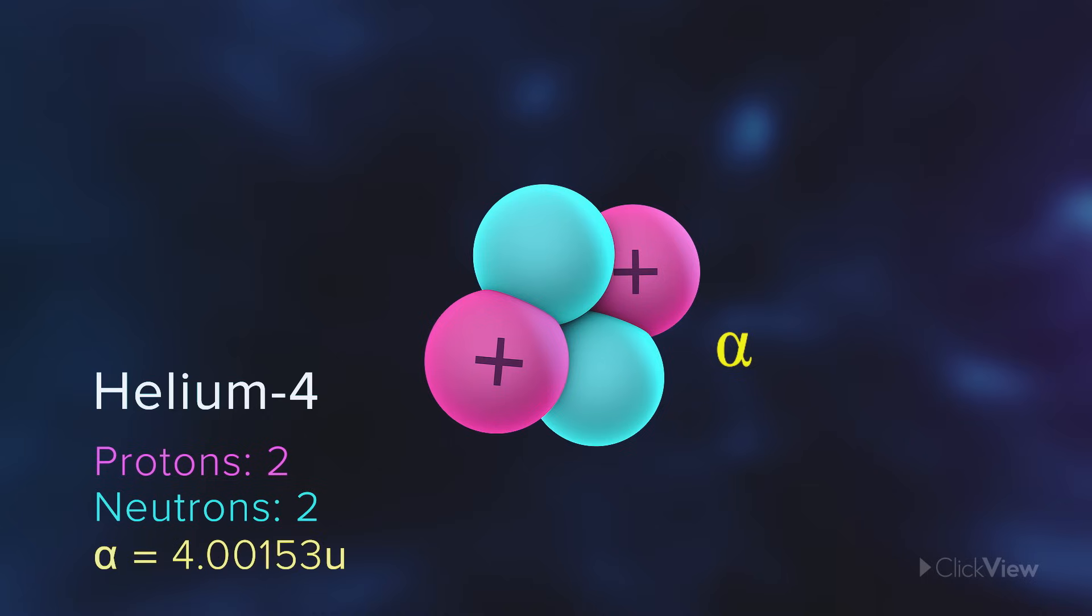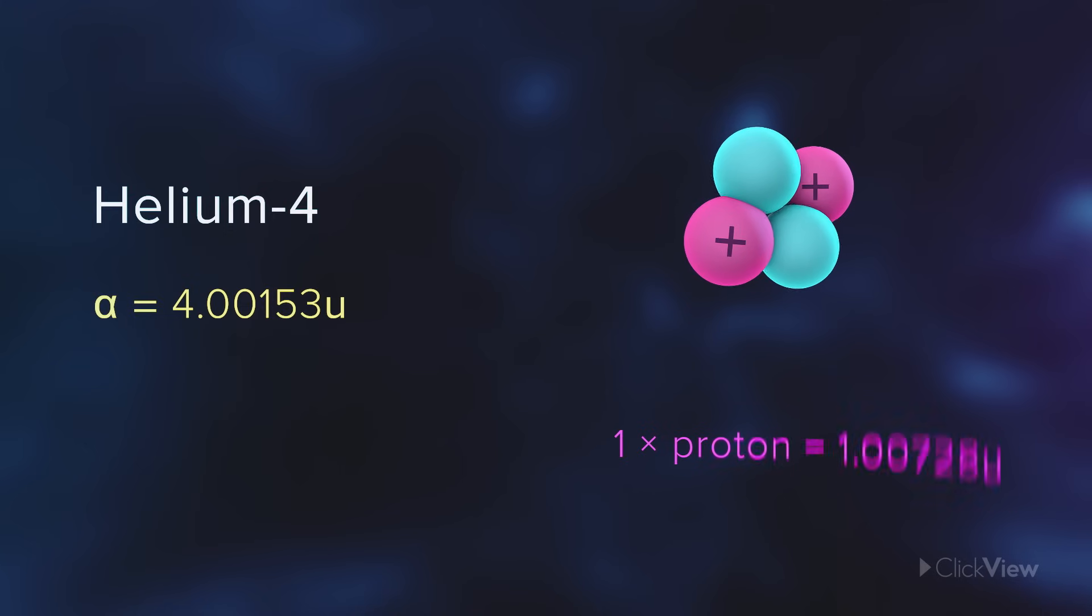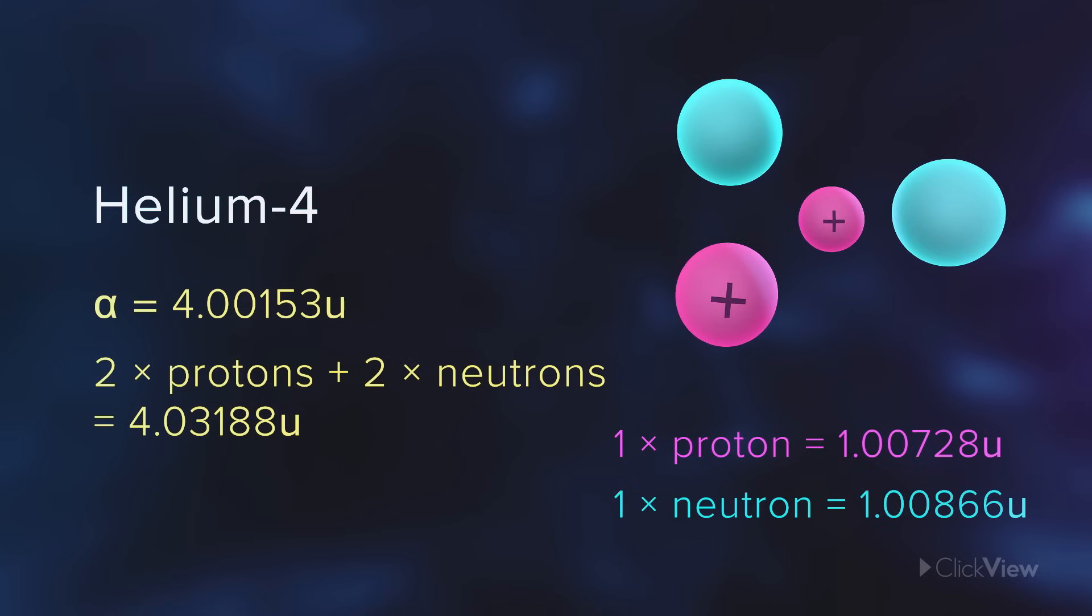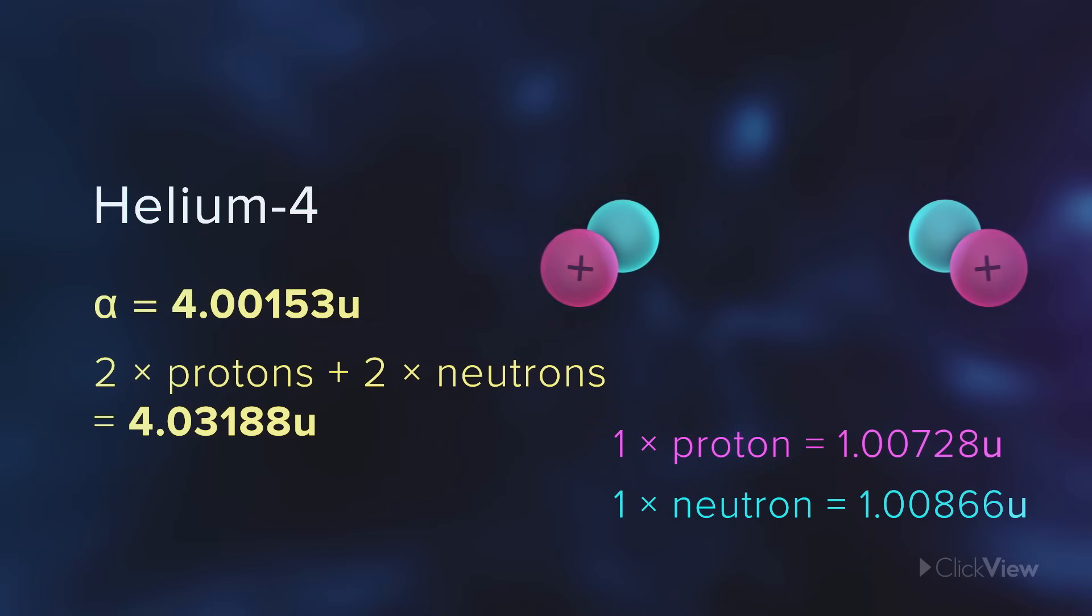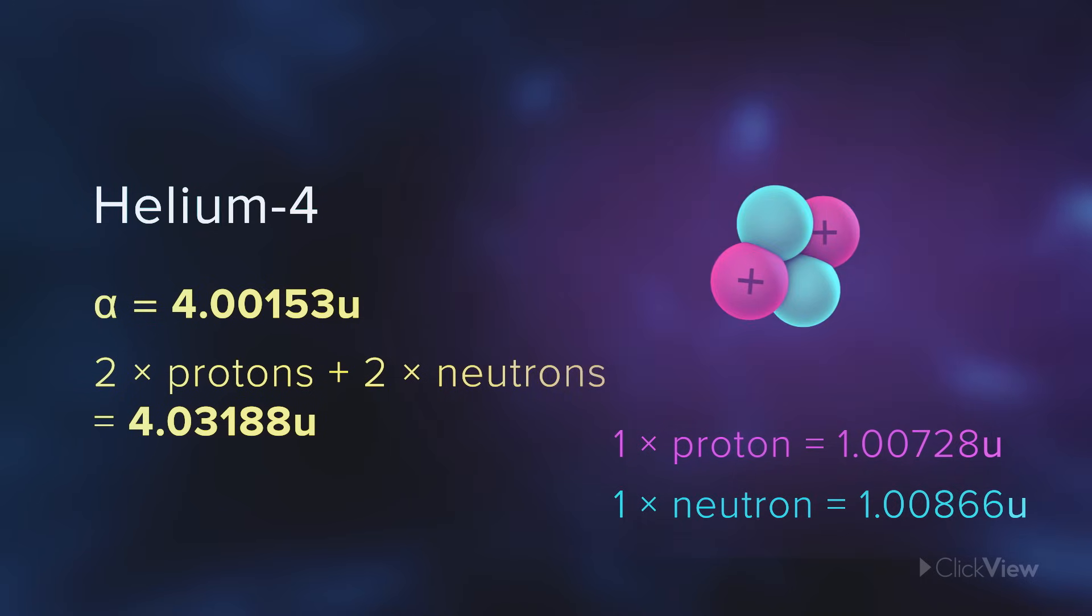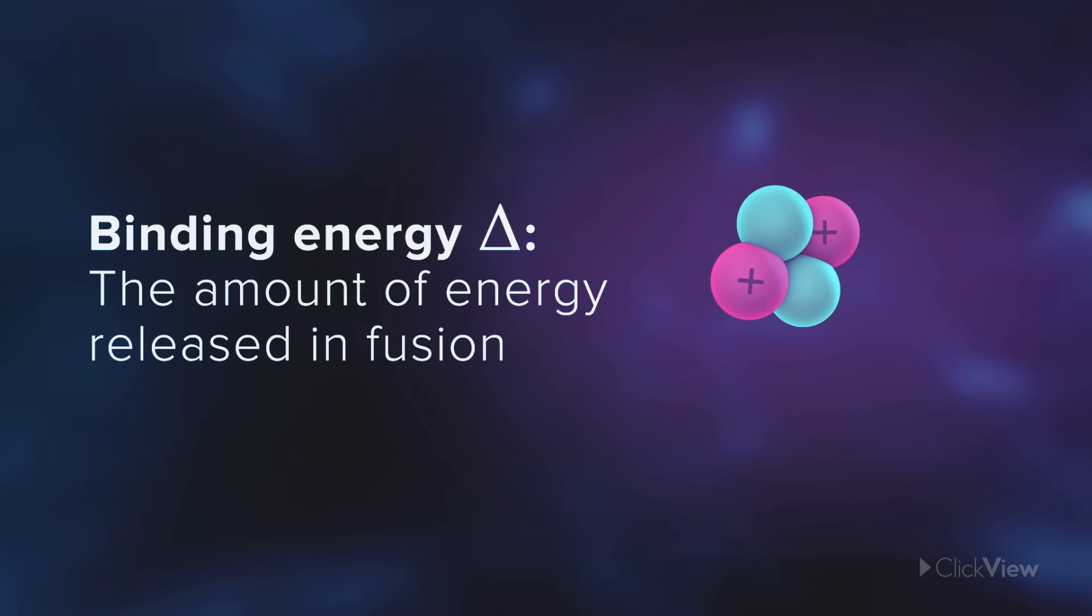Its atomic mass is 4.00153 units. But if you weighed the masses of two protons and two neutrons on their own, they'd add up to a total of 4.03188 units. The difference is tiny, but some of that mass changed into other forms of energy when the nucleons were squeezed close together. This is called an atom's binding energy.